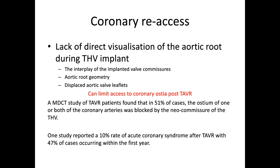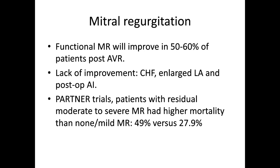Re-accessing coronaries is more difficult with a supra-annular valve. In younger high-risk patients, some cardiologists prefer an intraannular valve for easier coronary re-access, but in younger patients you want more durability, so I tend to prefer a supra-annular valve. Regarding mitral regurgitation: functional MR will improve in 50-60% of patients post-AVR. There is a lack of improvement if you have congestive heart failure, enlarged left atrium, or post-op AI. In the PARTNER trials, patients with residual moderate-to-severe MR had higher mortality than those with none-to-mild MR. If you don't feel the MR will improve after TAVR, refer those patients for surgery.